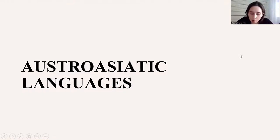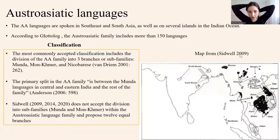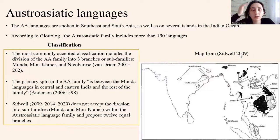I will now briefly discuss the classification of Austroasiatic languages. The Austroasiatic languages are spoken in Southeast and South Asia, as well as on several islands in the Indian Ocean. According to Glottolog, the Austroasiatic family includes more than 150 languages.